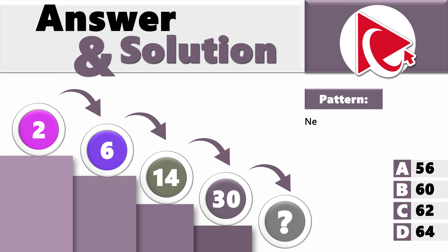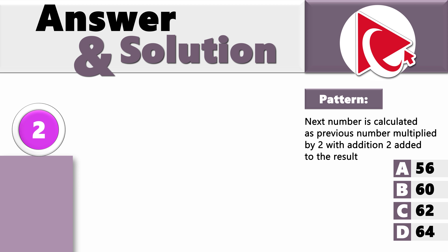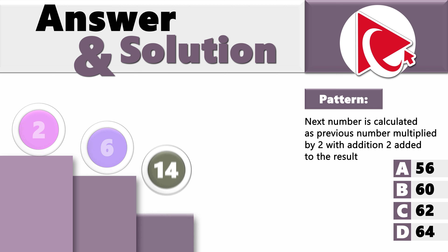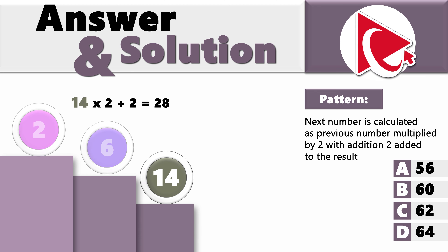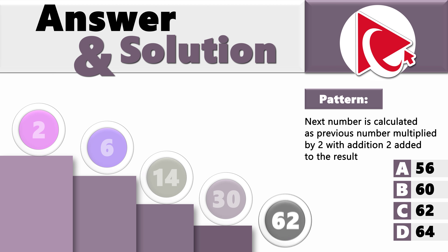The pattern here is that the next number is calculated as the previous number multiplied by 2, with the addition of 2 to the result. For example, the starting number is 2. As it falls to the next step: 2 × 2 + 2 = 6. Continuing: 6 × 2 + 2 = 14. Then: 14 × 2 + 2 = 28 + 2 = 30. To calculate the missing value: 30 × 2 + 2 = 60 + 2 = 62. So the correct answer here is choice C: 62.